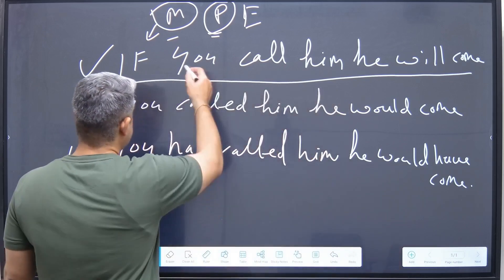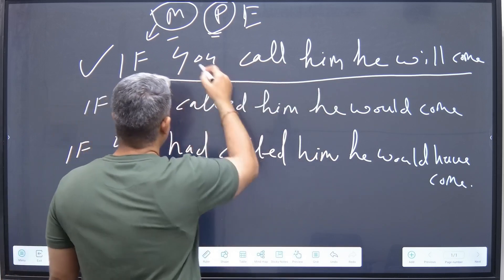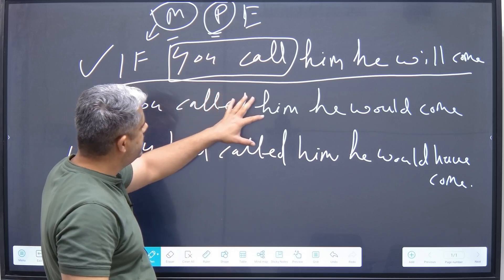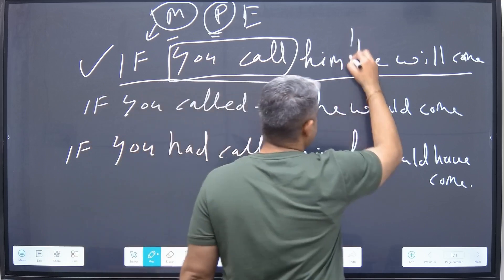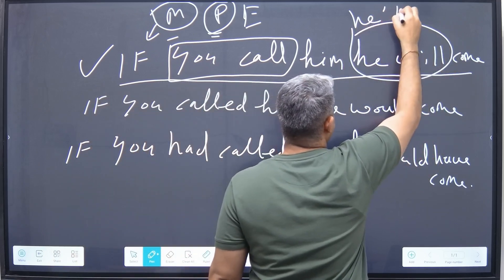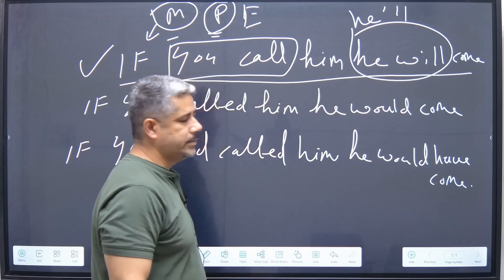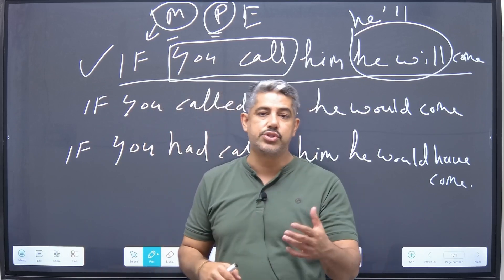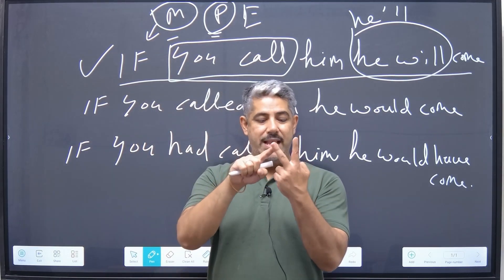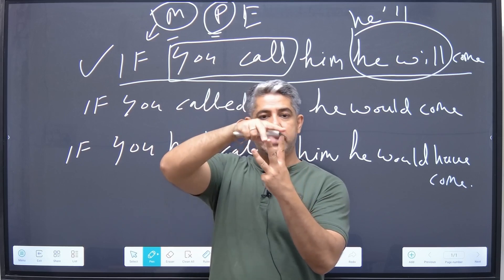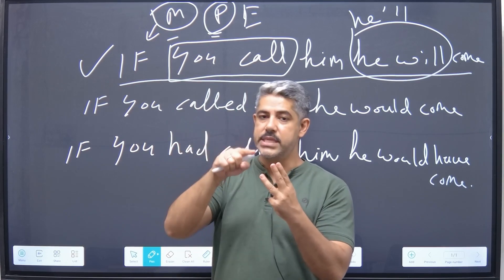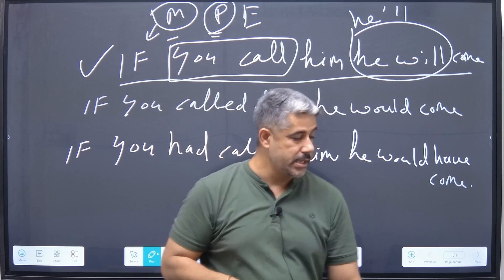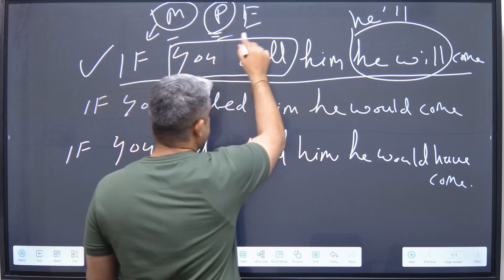Now, talk about the meaning is done. For pronunciation, you can look for the contracted form in the sentence. If you call him, he'll come. So the contracted form is here: 'he will' becomes 'he'll come.' In the sentence, you just have one contraction. I advise most of my learners to use contracted forms too — 'he will come' becomes 'he'll come.' This way, you're practicing speaking naturally, very close to the native-like speech pattern. So: if you call him, he'll come. That's the pronunciation part taken care of.